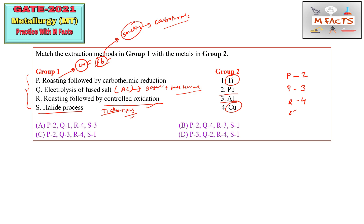We produce titanium chloride from titanium oxide, and then reduce this titanium chloride by magnesium — this is known as the halide process. So titanium you can match with halide process, giving S as 1. We have code 2, 3, 4, 1. Options starting with other than 2 we can cross. Options ending with 1 remain, and C is the correct answer. B is wrong and A is also wrong.